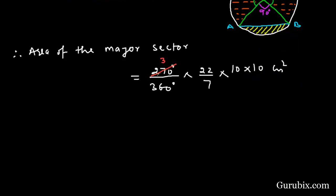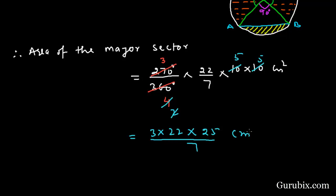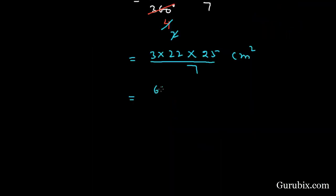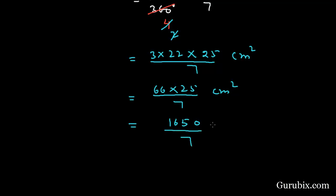Simplifying: dividing 270 and 360 by 90 gives 3 over 4. Then dividing 4 into 100 gives 25. So we have 3 times 22 times 25 over 7 centimeters squared, which equals 66 times 25 over 7, giving 1650 over 7 centimeters squared. This equals 235.71 centimeters squared.